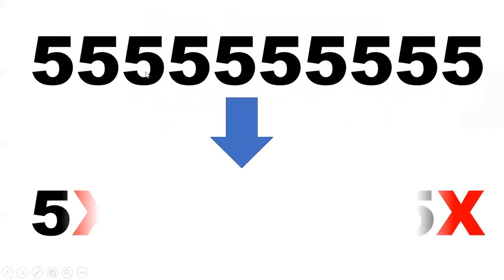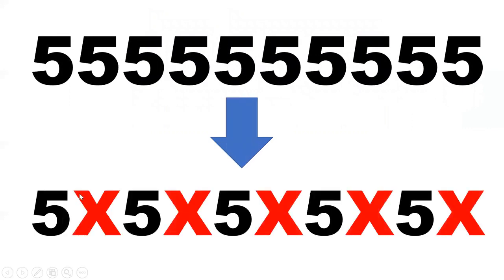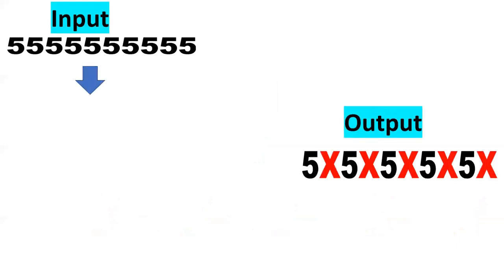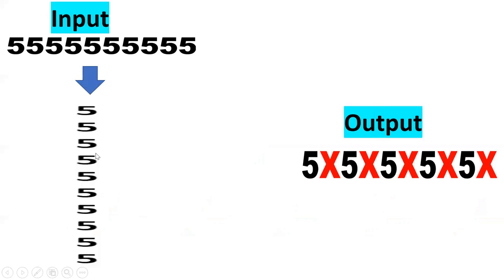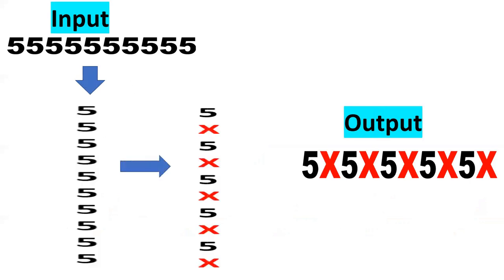Now we'll see the actual requirement. Assume this is my phone number. Alternate numbers — at second, fourth, sixth, eighth, and tenth positions — need to be masked with X. We need to convert horizontal to vertical, mark alternates as X, then aggregate back to get the required output.